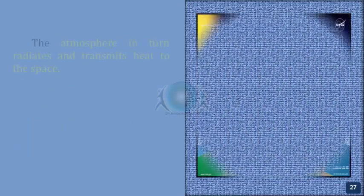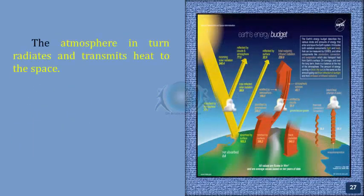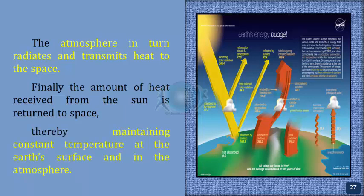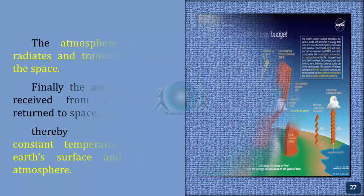The atmosphere in turn radiates and transmits heat to space. Finally, the amount of heat received from the Sun is returned to space, thereby maintaining a constant temperature at the Earth's surface and in the atmosphere.